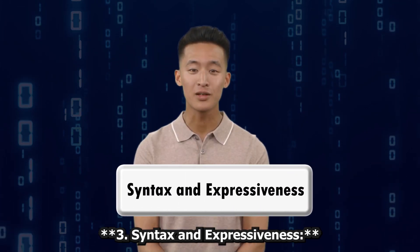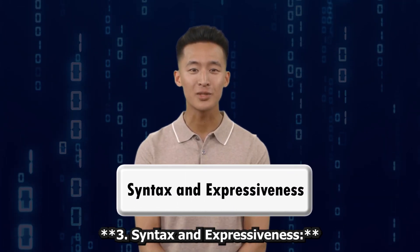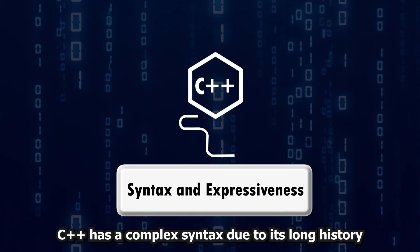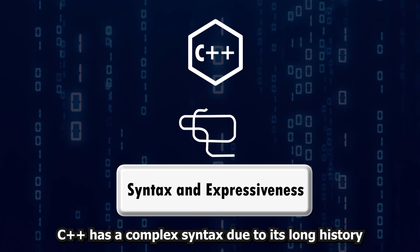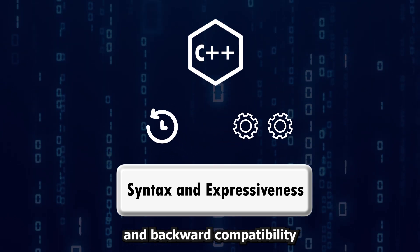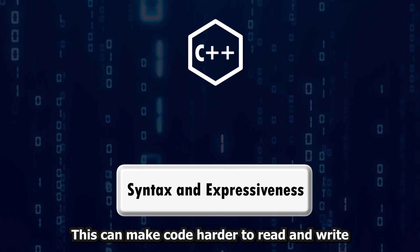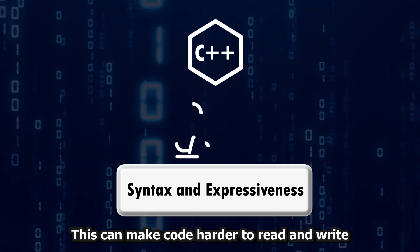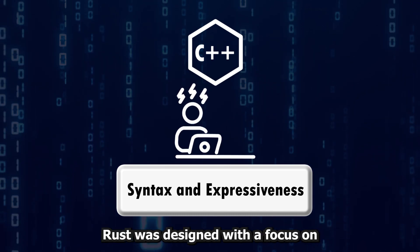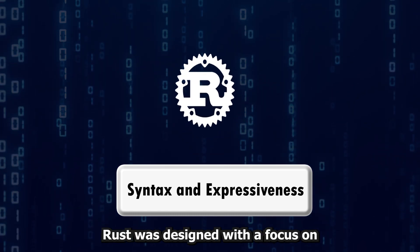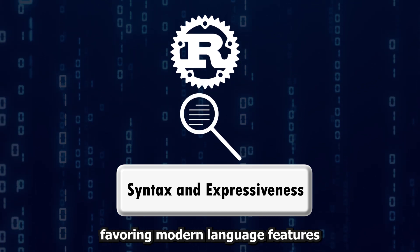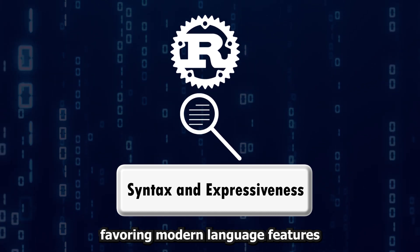3. Syntax and Expressiveness. C++ has a complex syntax due to its long history and backward compatibility. This can make code harder to read and write, leading to challenges for newcomers. Rust was designed with a focus on improving readability and expressiveness, favoring modern language features.